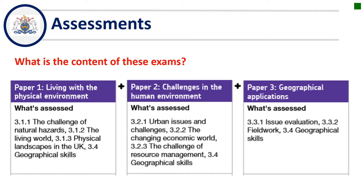What is the content of these exams? Paper one is the physical environment exam — so natural hazards, the living world and physical landscapes in the UK. Paper two is the human exam — urban issues and challenges, the changing economic world, and the challenge of resource management.